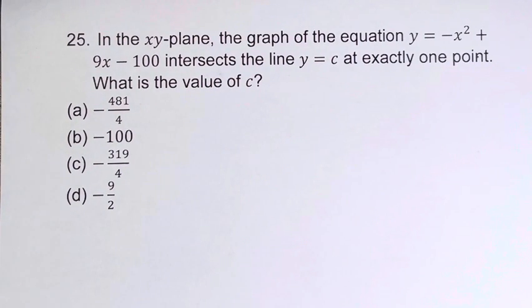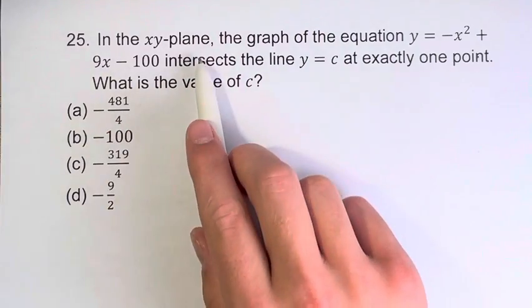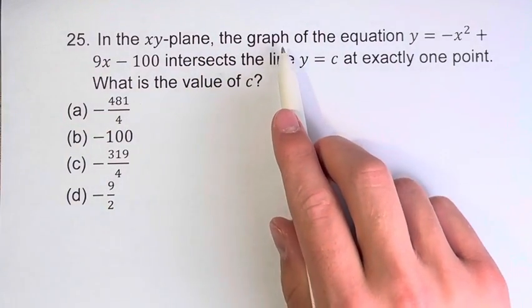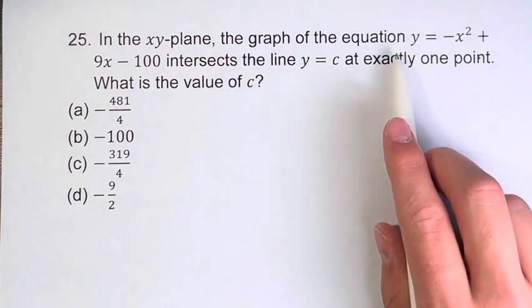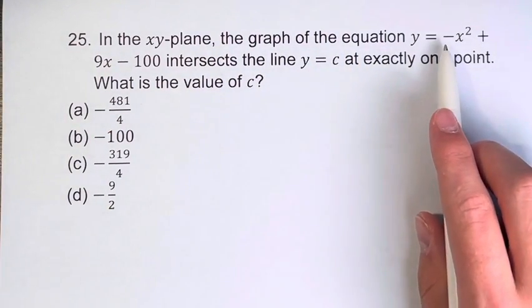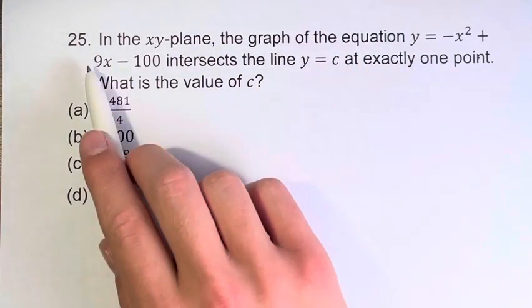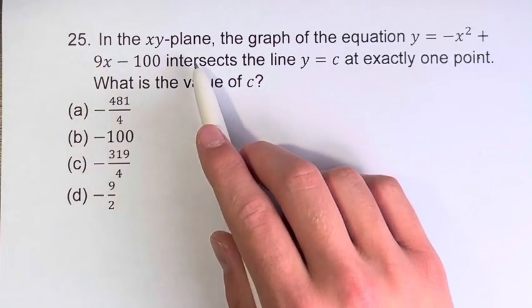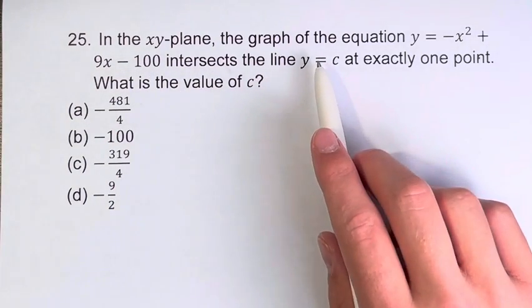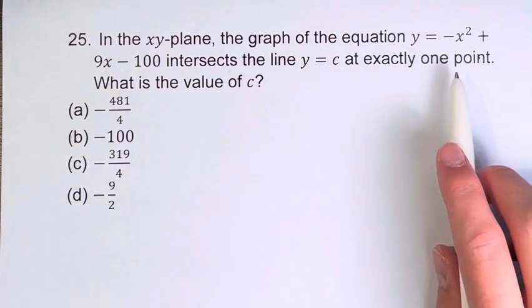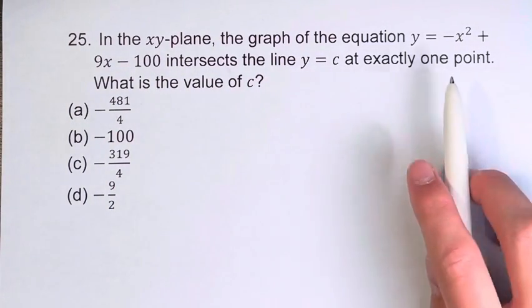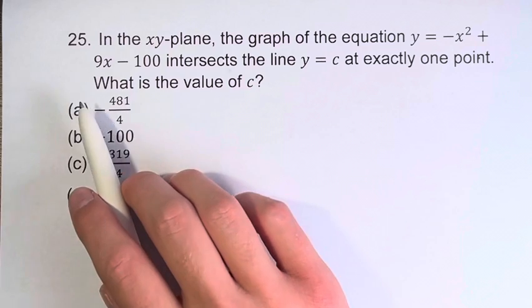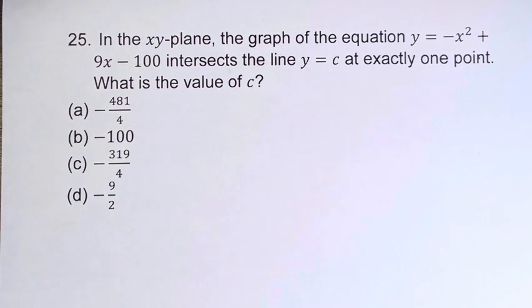Hello, and welcome back to another video. In this problem, we're told that in the xy-plane, the graph of the equation y equals negative x squared plus 9x minus 100 intersects the line y equals c at exactly one point. And we're asked, what is the value of c?